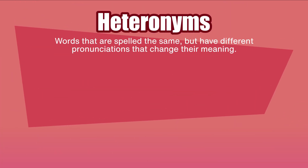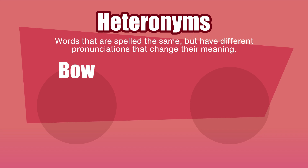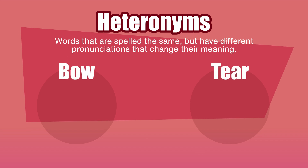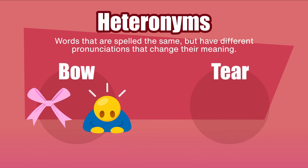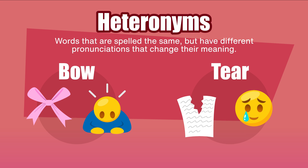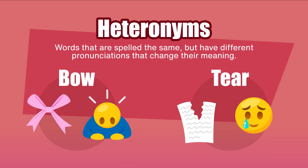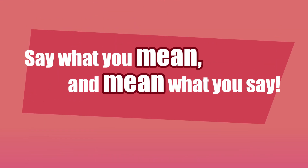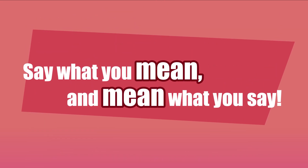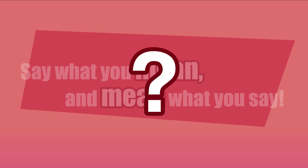Heteronyms — words that are spelled the same but have different pronunciations that change their meaning — are common in English, like 'bow' and 'bow,' or 'tear' and 'tear.' As the saying goes, say what you mean and mean what you say. But how?